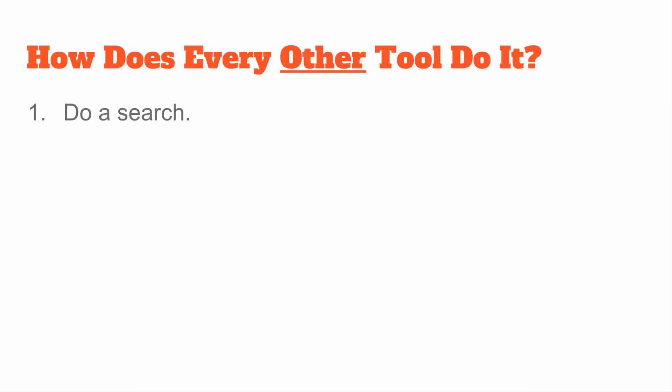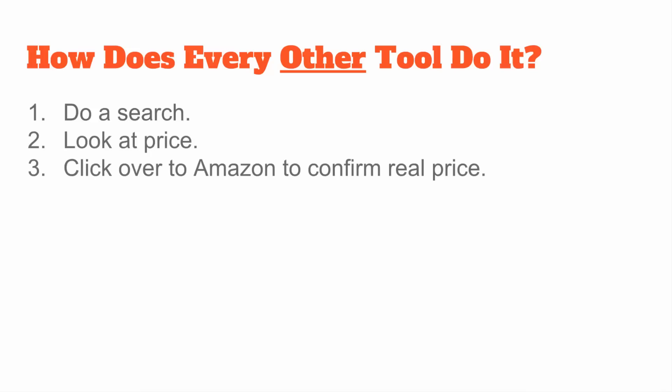Here's how every other tool does this: you do a search, look at the price, and then you have to click over to Amazon to actually confirm the price you're going to pay because the shipping costs are not included. They just show you the base price. And because Amazon sellers can choose free shipping, $3.99 shipping, or $10 shipping, the price they show doesn't really tell you much — it's honestly just a starting point. You have to click over to Amazon to confirm the price, and then you also have to click over from their tool to confirm the FBA price.